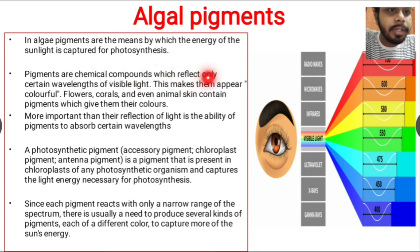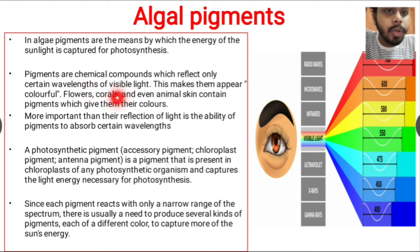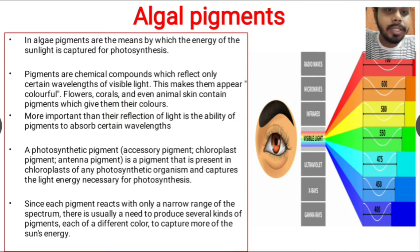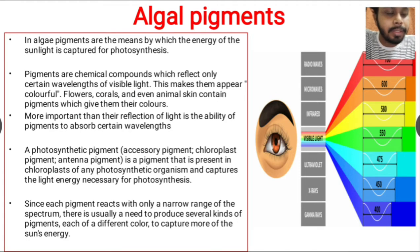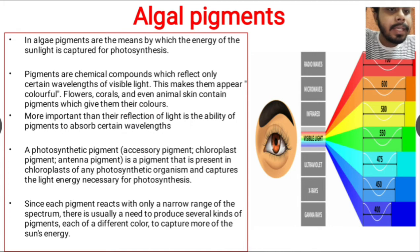Pigments are chemical compounds which reflect only certain wavelengths of visible light, making them appear colorful. Like flowers, corals, and even animal skin contain pigments which give them their colors. The main concept of pigments is that they capture a particular wavelength of light and reflect some light at a different wavelength.